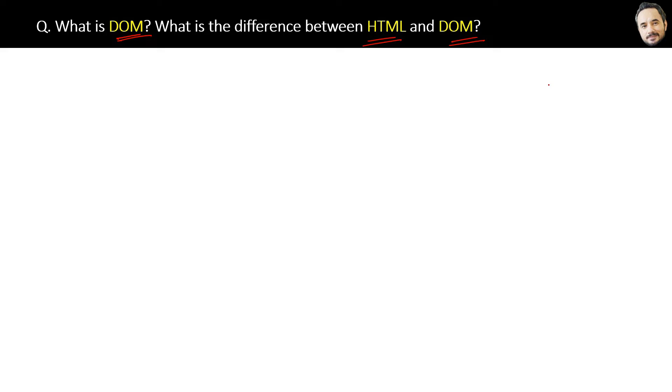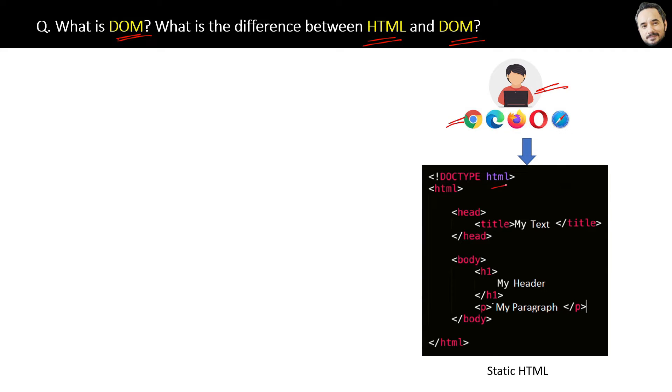Let's try to understand with the help of an example. Suppose you are a user and you open the browser, open one website, and here is the static code of that website. This is HTML, right? You can read it, but inside the memory, the computer, or you can say the browser, will not see it as HTML.